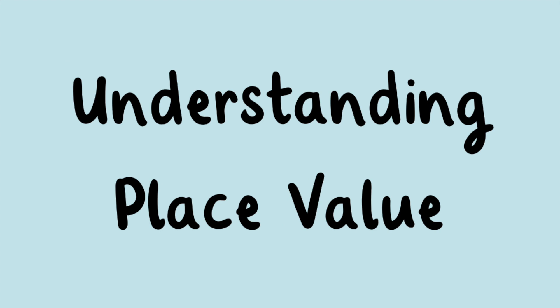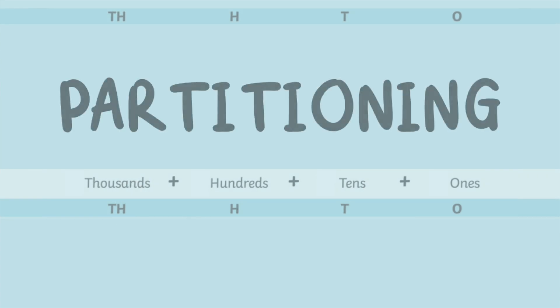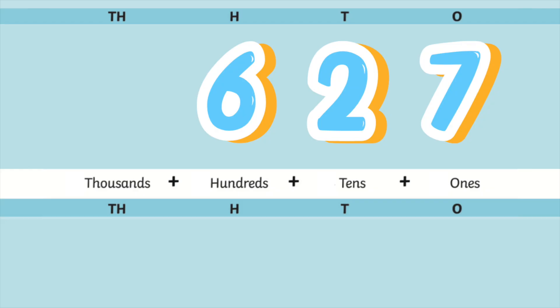Understanding place value. To help us understand place value better, we can use techniques such as partitioning. This is where we take a conscious look at place value and split numbers up into their different units, just like we did earlier to show that 627 is 600 plus 20 plus 7.